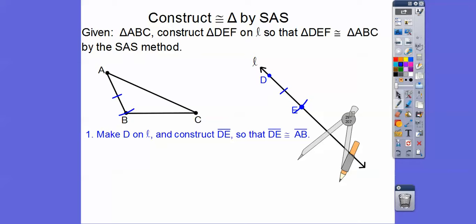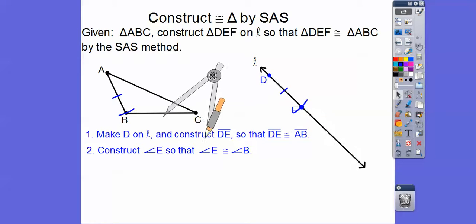Now, this is side, angle, side. So next what we're going to do is copy angle E over here so that angle E is congruent to angle B right there. So when we copy an angle, I'm going to do angle B right there. I'm going to put that right there, and then what I'm going to do is make this arc go through both sides of the angle.